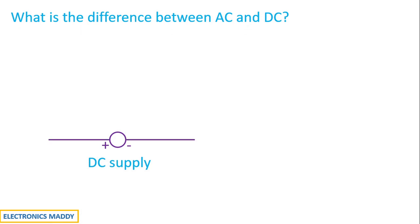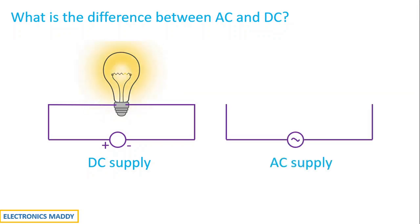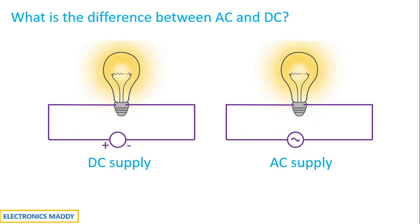Whenever we connect a DC supply to a light load — which is basically a lamp — the current starts flowing and the light starts glowing. Even if you have an AC supply and connect it to the same light load, the current starts flowing and the light glows. You don't fundamentally see any difference, but there are a lot of differences taking place internally.